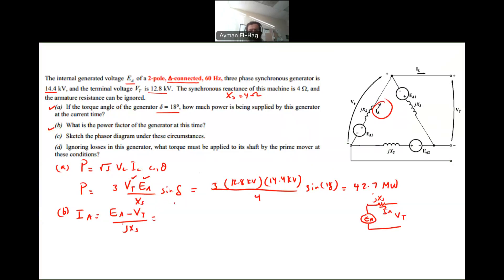Now, EA, we know the angle of it. So it's equal to 14.4 angle of 18 minus the Vt, which is equal to 12.8. Of course, this is kV, and this is also kV,